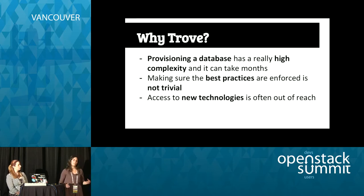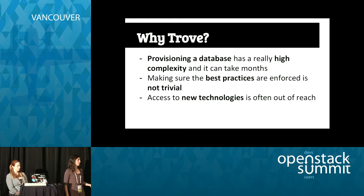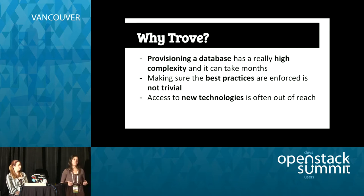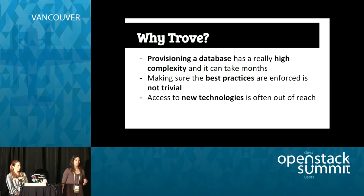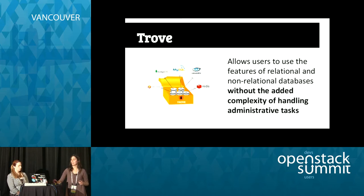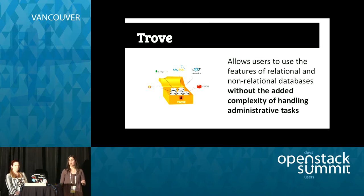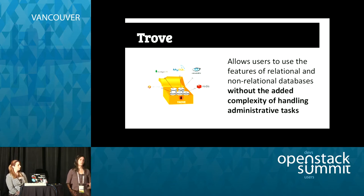In another case, there are companies that already have their infrastructure, but they want to try another technology because it might make things faster and easier for deployments. But they cannot test a new technology easily — they have to put a lot of money and time into it and it's really hard. So Trove aims to provide an easy and standard way for developers to access relational and non-relational databases without the burden of having to deal with all this complexity.